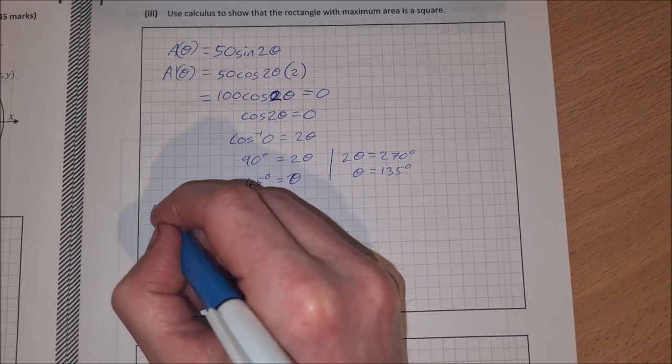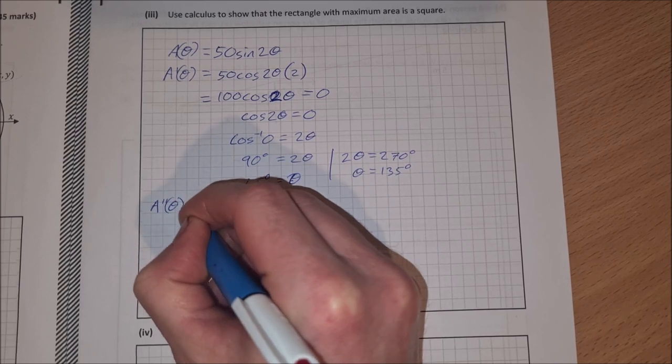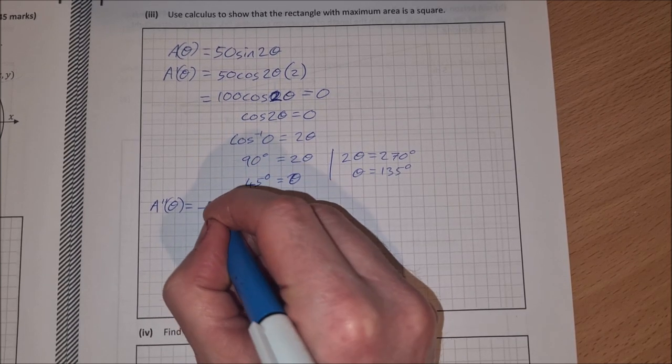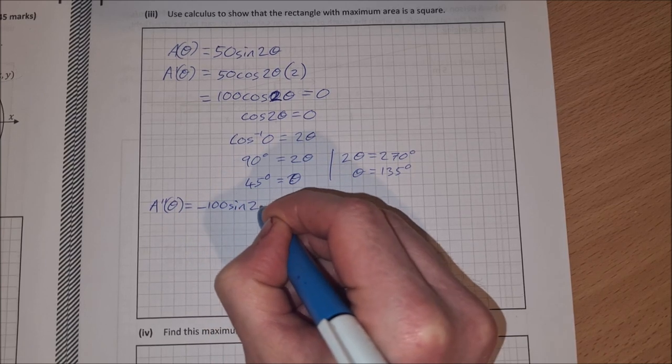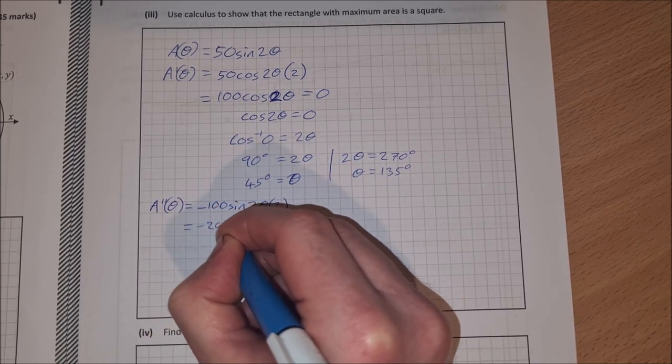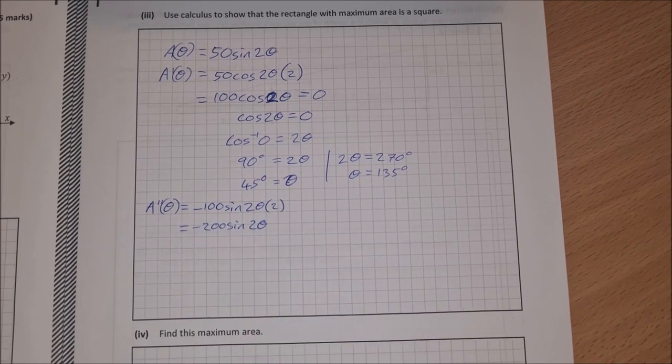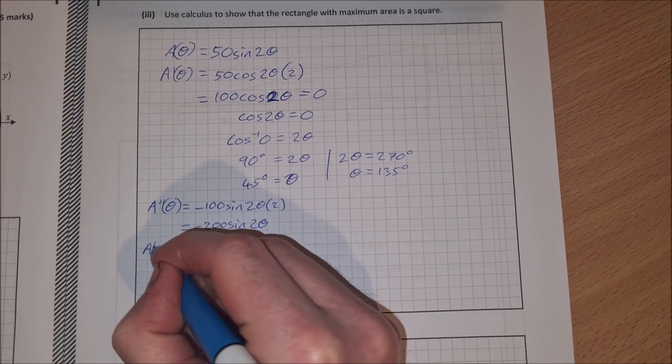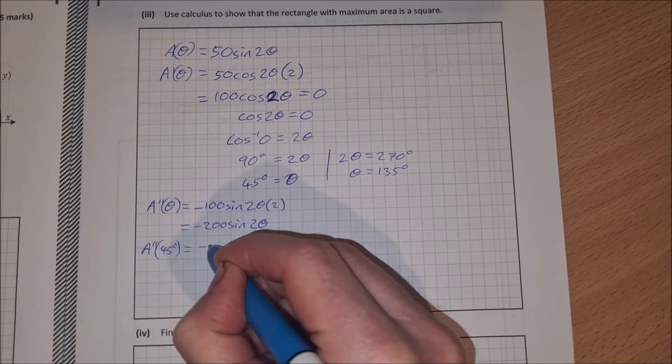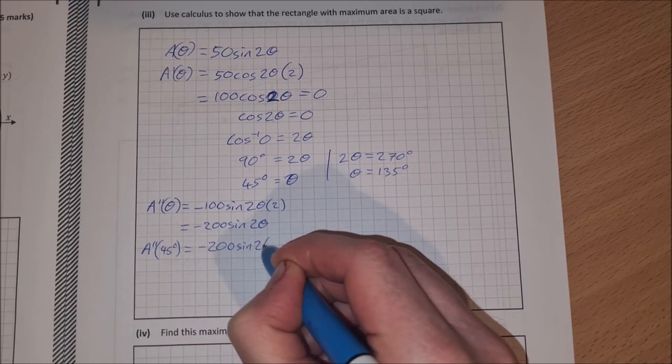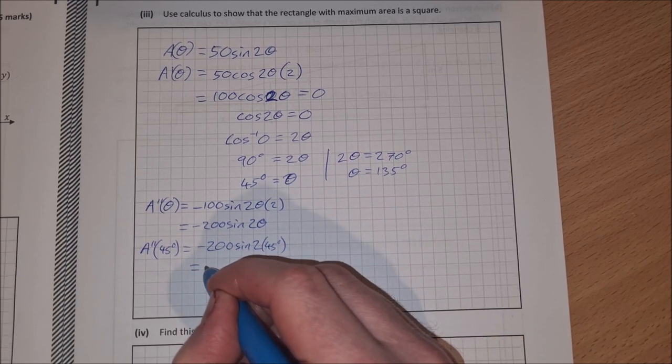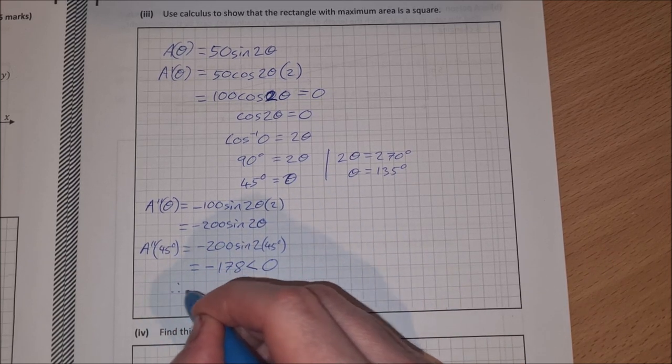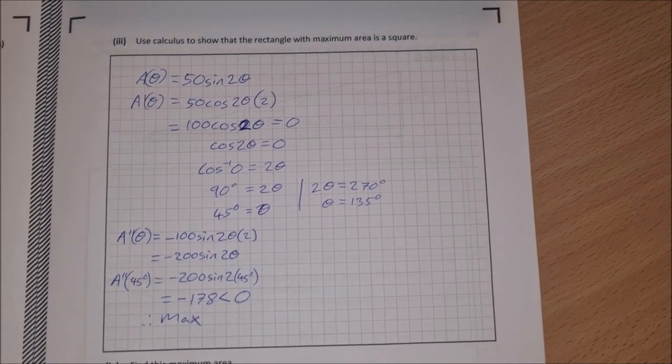So we need to, first of all, show that this is a max. So we do the second derivative, which will be equal to, so differentiating this here. Differentiate cos, you get minus sine. So minus 100 sine 2 theta times 2. So that's equal to minus 200 sine 2 theta. So then I want to sub in 45 degrees and show that this is less than 0. So let's say the second derivative at 45 degrees is equal to minus 200 sine 2 times 45 degrees. And that is equal to approximately minus 178. It doesn't matter what the value is really as long as it's less than 0. So therefore, we have a max. So we've shown that we have a maximum area when this angle is 45 degrees.